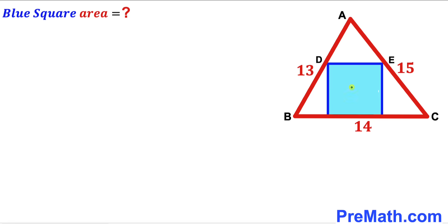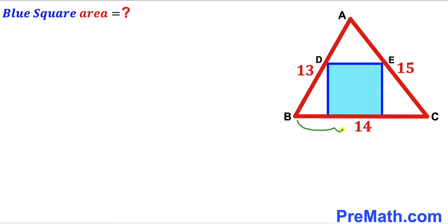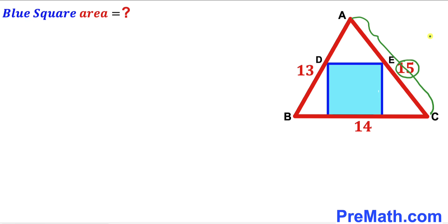Welcome to pre-math. In this video we have a blue shaded square fully inscribed in triangle ABC, where the side length AB is 13 units, the horizontal side BC is 14 units, and the length AC is 15 units. Our task is to calculate the area of this blue shaded square.